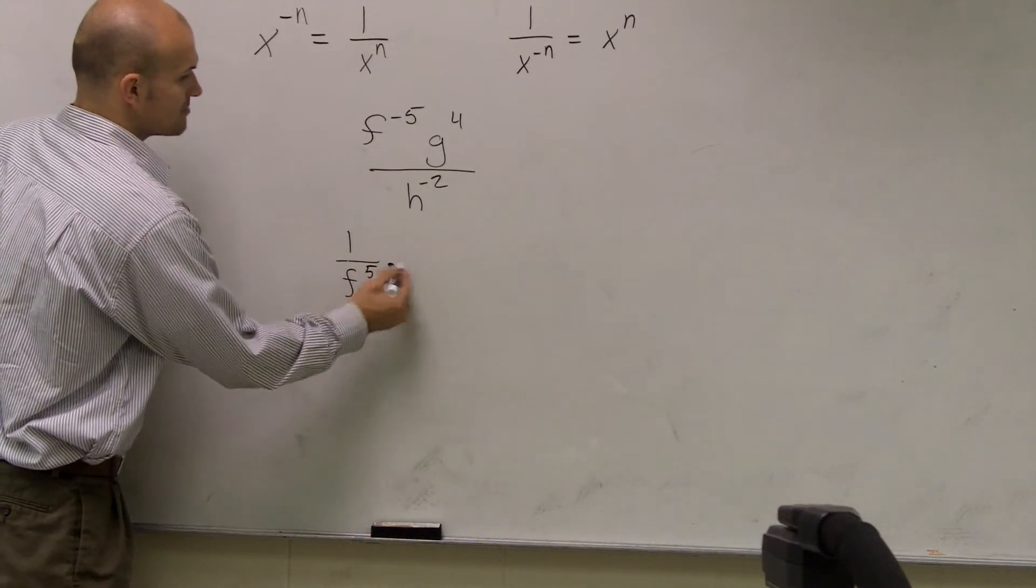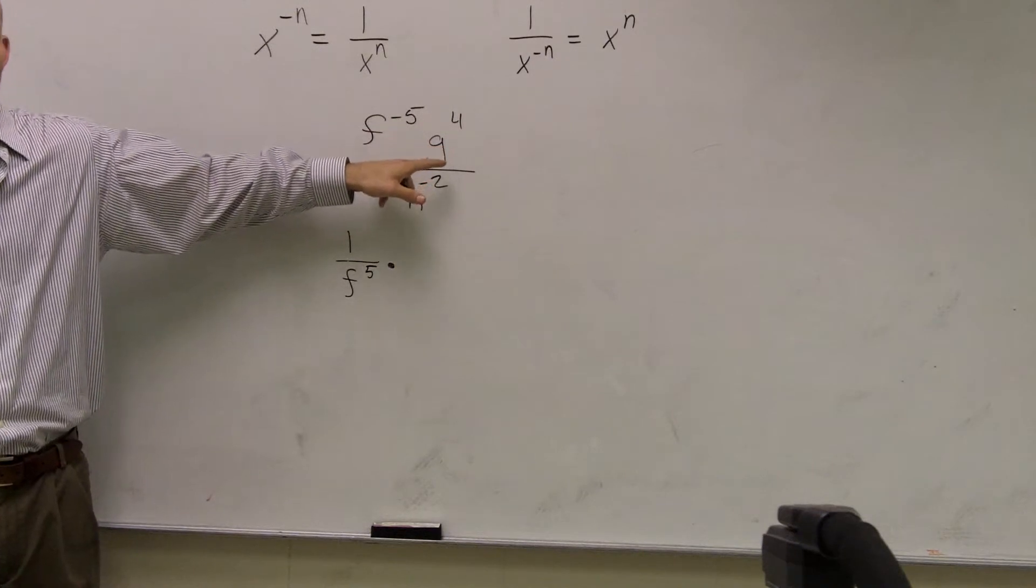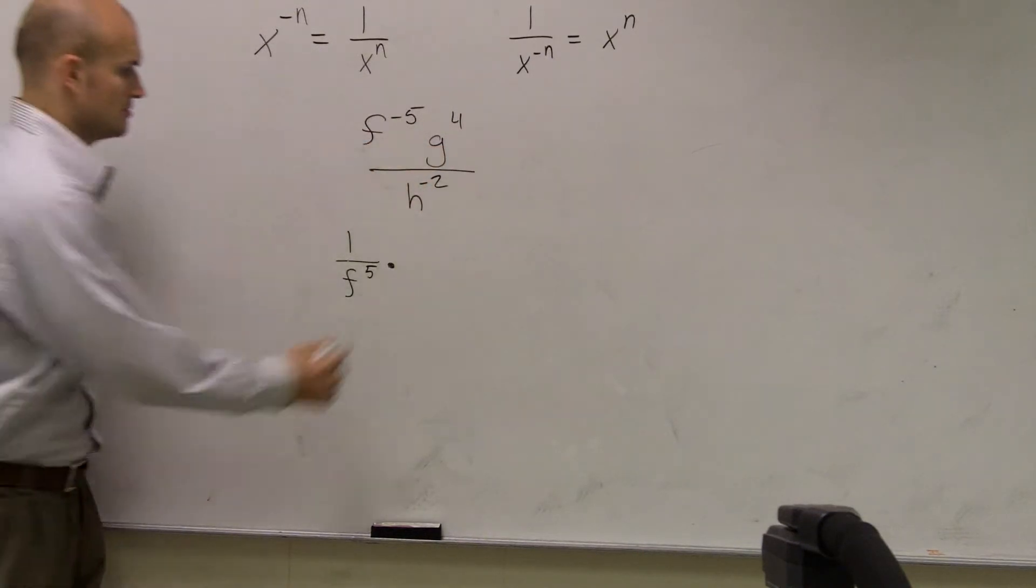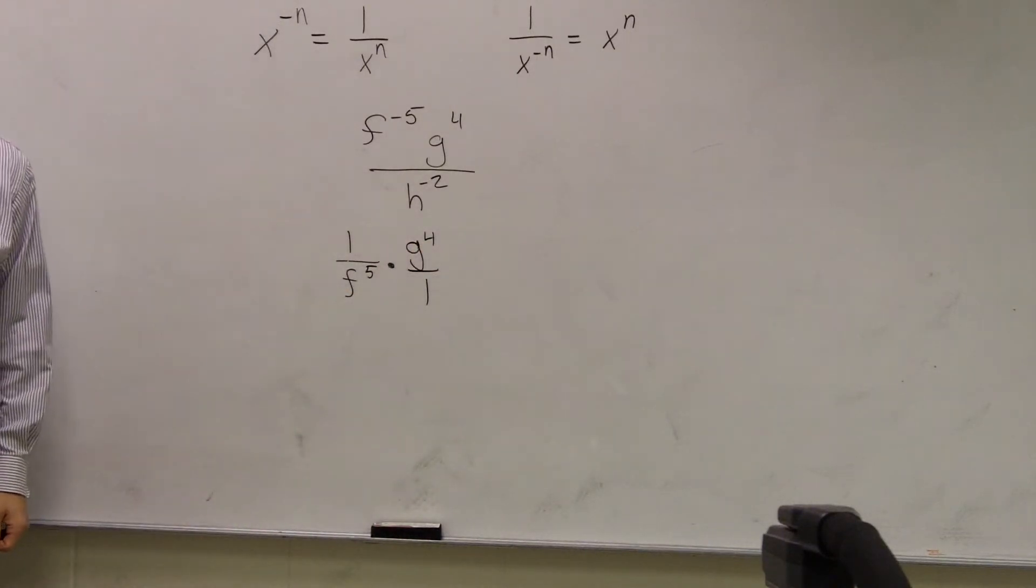Then that's multiplied times g to the 4th. Is g to the 4th over 1 or is that under 1? It's already over 1, right? You can put a 1 over there. That's going to help you out. You don't have to, but a lot of people get confused, so I'll put it over 1.